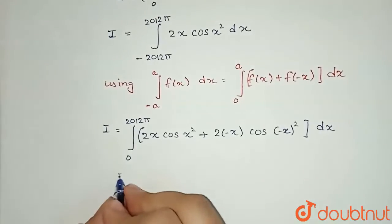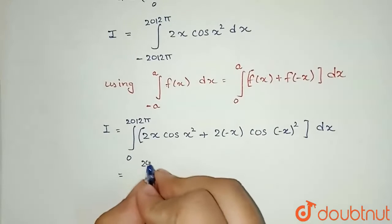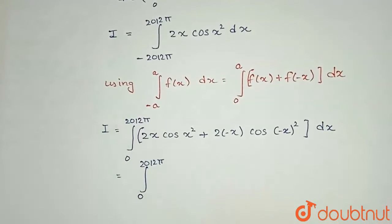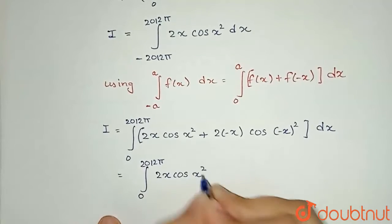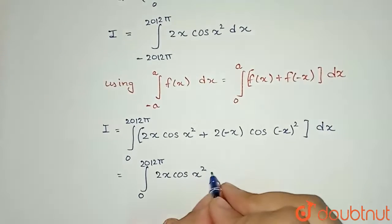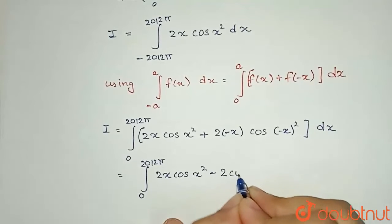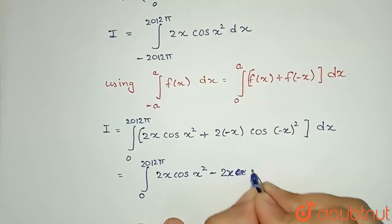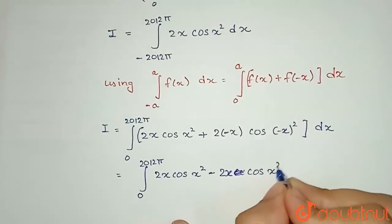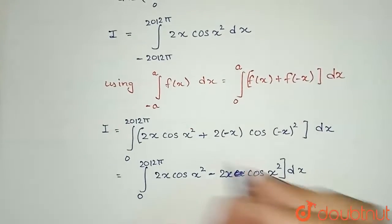Let us simplify further. So 0 to 2012π: 2x cos(x²) will be as it is, no changes in this. But if you see here, I have a minus sign. It will come outside, so -2x times cos(-x)², which will be x², with respect to dx.